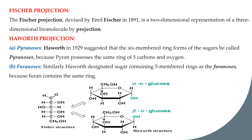The Fischer projection was devised by scientist Emil Fischer in 1891 and is a two-dimensional representation of a three-dimensional molecule. Haworth, in the 19th century, suggested that the six-membered ring form of sugar be called pyranose, because the pyran ring possesses the same structure — five carbons and one oxygen in the ring.